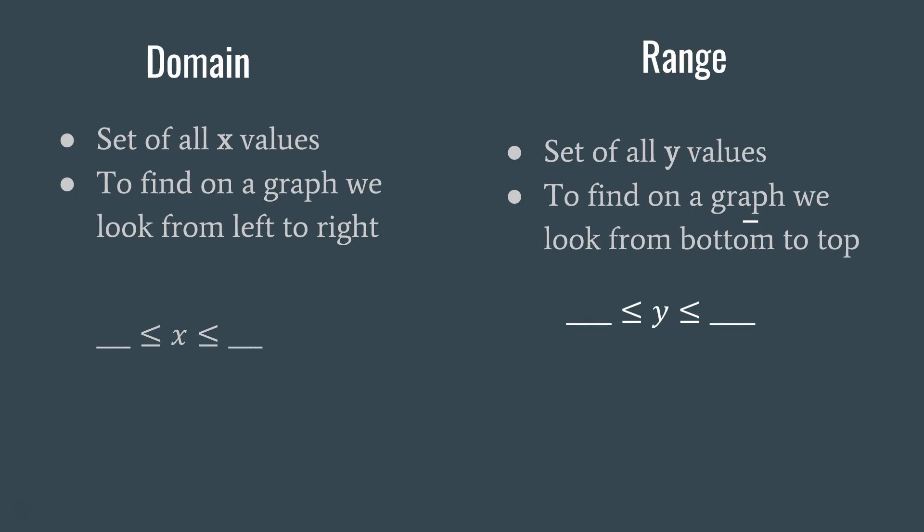Let's look at the domain of a graph — it's the set of all x values. To find the domain, we look at the graph from left to right. Once we identify those points, we use the x values to indicate the domain: we put the left endpoint x value on the left and the right endpoint x value on the right.